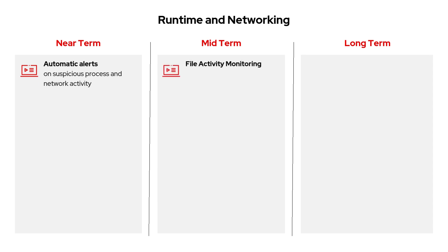In the midterm, ACS will introduce a new capability: file activity monitoring. This will track not only files accessed inside containers, but also in the host file system. With this feature, security teams can quickly spot abnormal behavior, such as unauthorized file access or potential data exfiltration attempts.